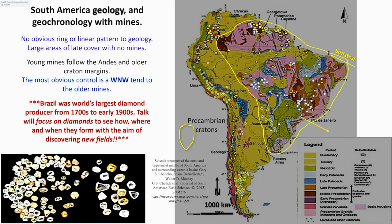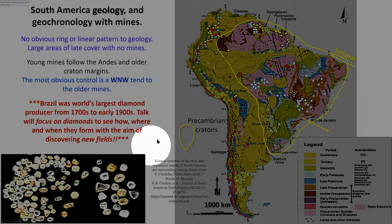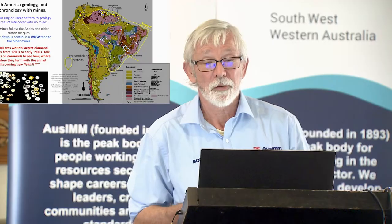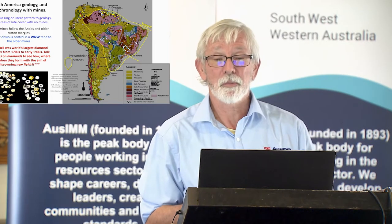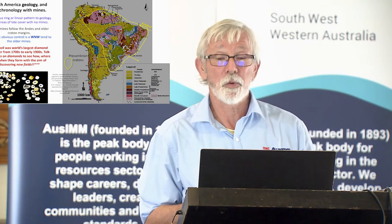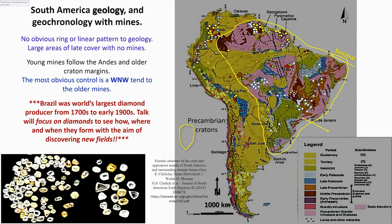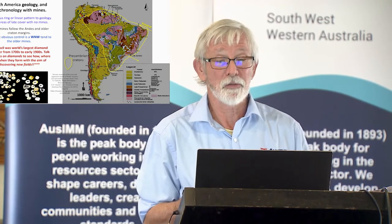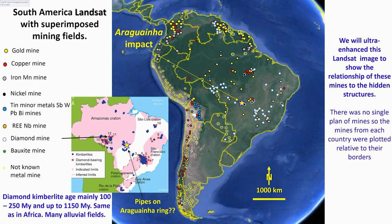So the geology of South America — effectively well over half of South America would be Archaean or Proterozoic, underlined by these cratons here. The mines really don't form patterns like we saw in Africa, except they form along a line there and a line there — orthogonal lines — so more linear-guided rather than ring-guided at the surface. Brazil was the world's largest diamond producer from the 1700s to the 1900s, so the aim is to see how we can discover new fields in Brazil, where they might lie. They haven't found any for a long time, so it could be a good time to get a few new ideas.